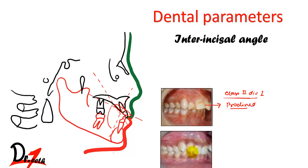The third patient is Class II division 2. In division 2 the central incisors are normally placed or slightly lingually placed, whereas the lateral incisors are tipped labially and/or mesially — meaning they are slightly proclined. In this case the inter-incisal angle will increase.